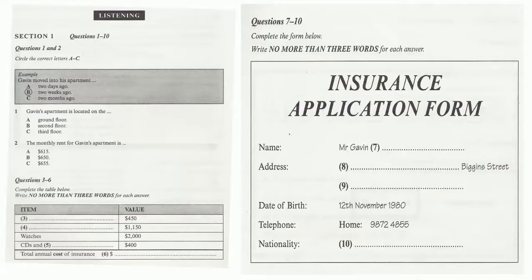Before the conversation continues, you have some time to look at questions 7 to 10. Now, listen carefully and answer questions 7 to 10. Can I arrange the policy over the phone? Sure. Just let me get the details down. So, that's Mr... Gavin Murray. That's M-U-R-R-A-Y.